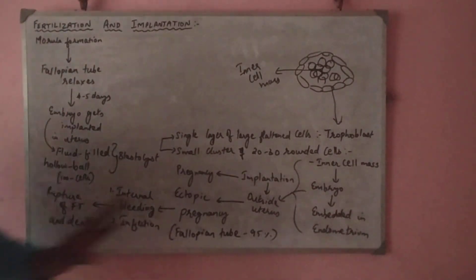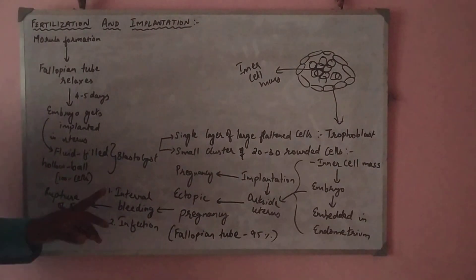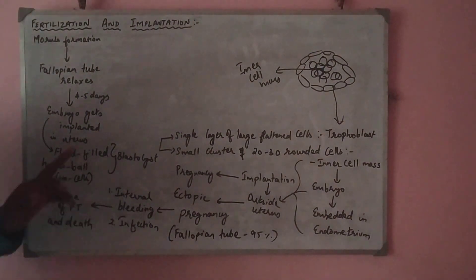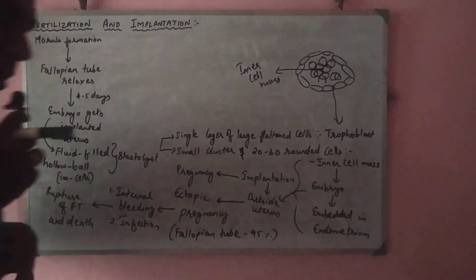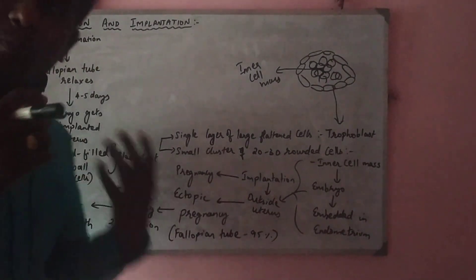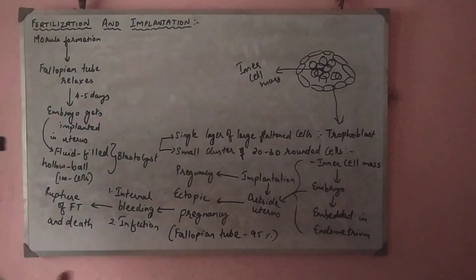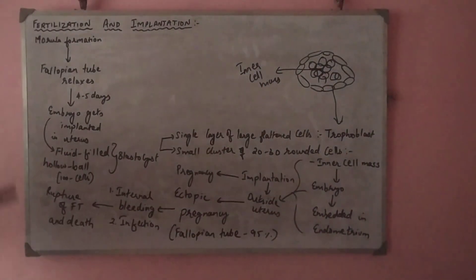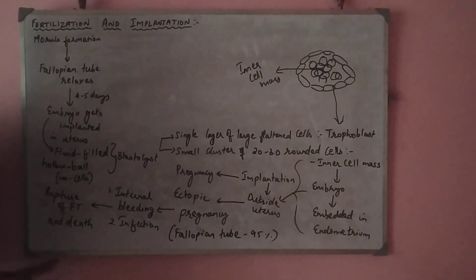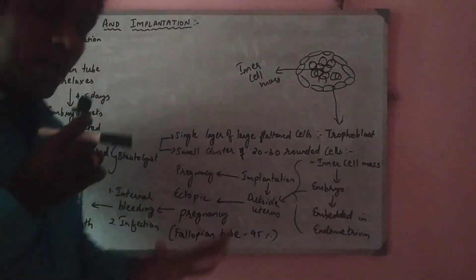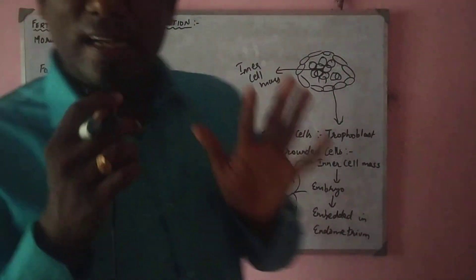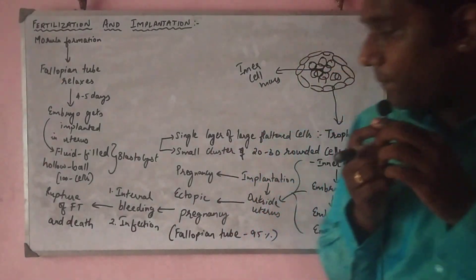What are the symptoms of ectopic pregnancy? It may lead to internal bleeding, a lot of infections, and menstrual, abdominal, and pelvic pain and inflammation. Finally, it may also lead to the rupture of the fallopian tube and cause the death of the female individual.